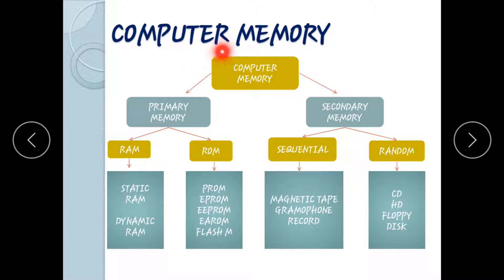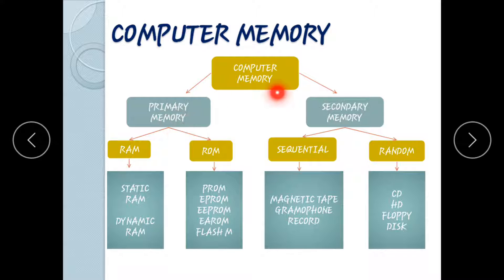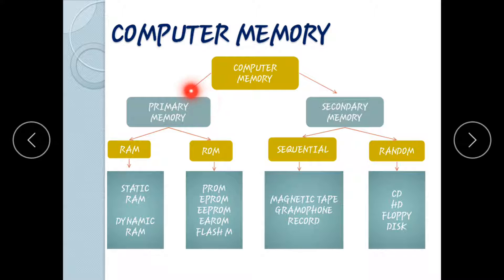Next, computer memory. Memory is where data and information are stored in the computer. Memory is divided into primary memory and secondary memory. Primary memory is non-volatile — it is a temporary memory.